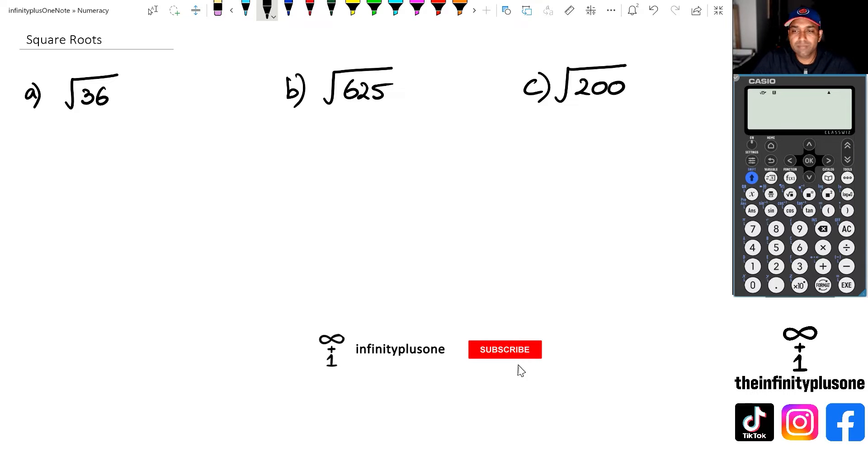All right, so what does it mean by square root? Basically, when they're talking about square root, we're actually looking for two numbers that are exactly the same and they multiply by each other to get this final answer.